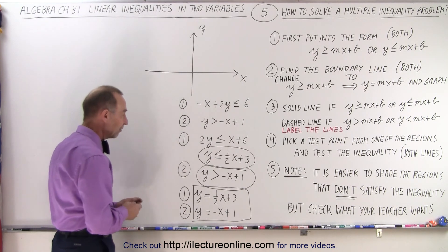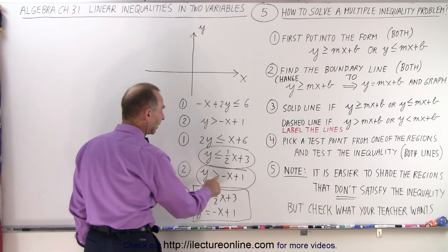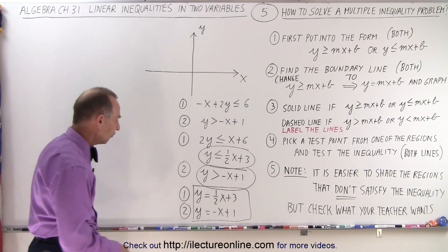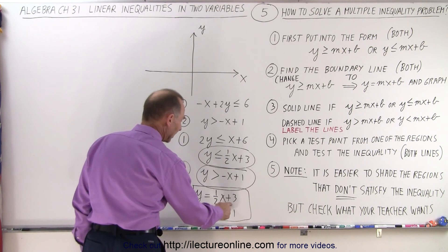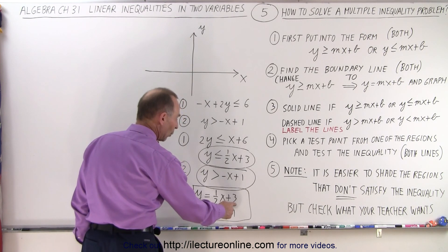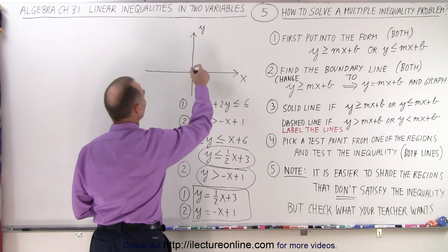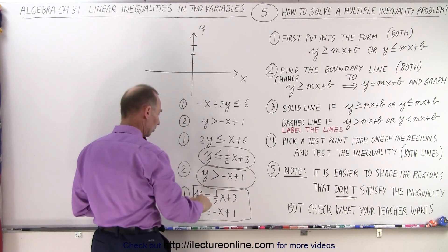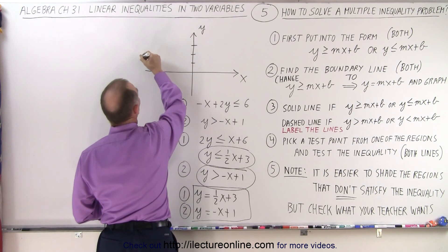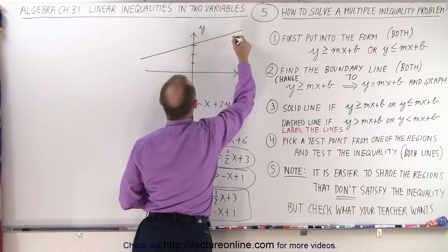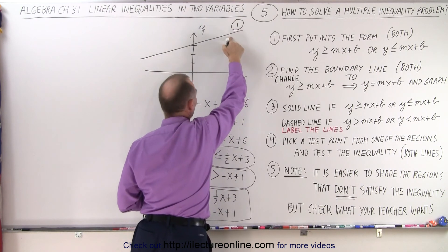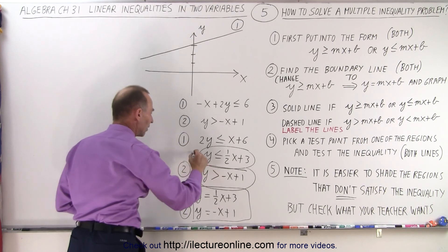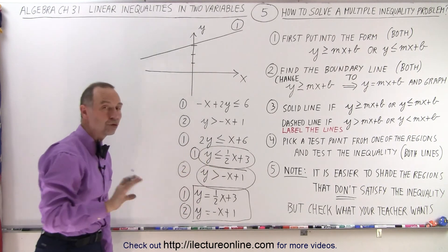Remember that if it's less than or equal to, we draw a solid line. If it's greater than, and we don't have an equal symbol there, we draw a dashed line. For the first one, we can see that the y-intercept is 3, and the slope is plus 1/2. So the line looks like this, and it's a solid line. I'm going to label that number 1, associated with number 1 here.